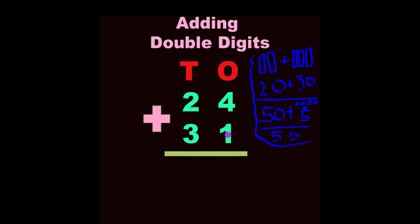You would just add the ones straight down. So what is 4 plus 1? 4 plus 1 equals 5. Okay. And then you would add the tens straight down. What is 2 plus 3?